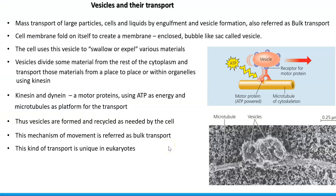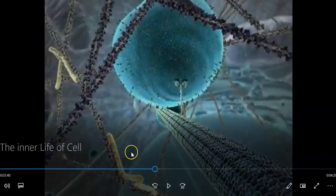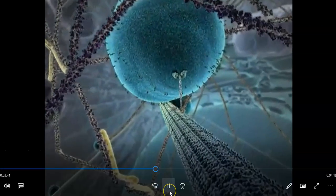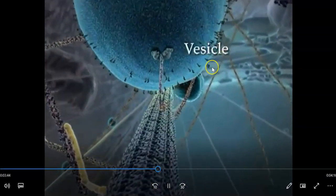Now we will look at what vesicles are and how they aid in the transport of substances or proteins within and outside the cell. Mass transport of large particles, cells, and liquid by engulfment and forming into a vesicle is referred to as bulk transport. In simpler terms, a vesicle is a membrane-enclosed bubble-like sac created when the cell membrane folds upon itself.